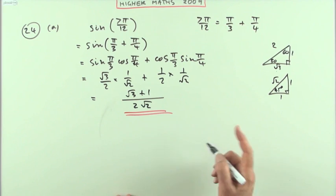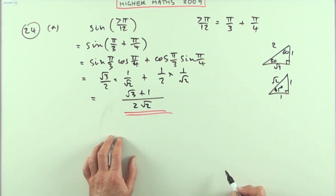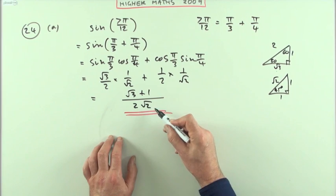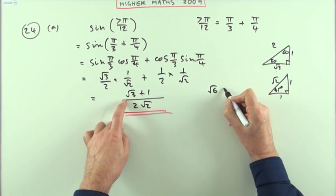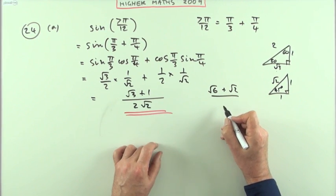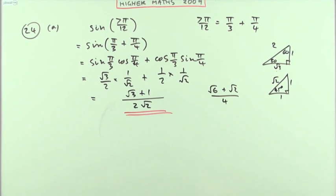Rationalize the denominator, for which there's no need in this particular case. You could multiply the top and the bottom by √2. Doing that would then give you √6 plus √2 over 2 times 2 which is 4. Which you could have instead.